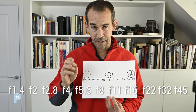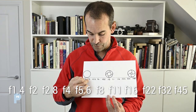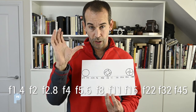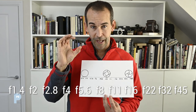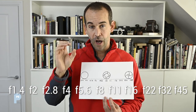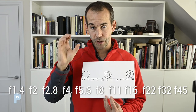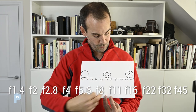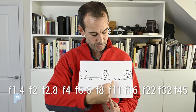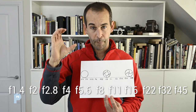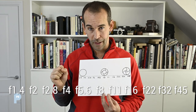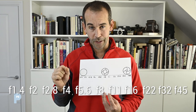Let that sink in. As you go from F2 to F2.8, you are closing the aperture by one stop — that is letting in half as much light. And if you went in the other direction from F16 to F11, you would be opening the aperture up by one stop and letting in twice as much light. Make sure you understand that because it's a very fundamental principle of how aperture works.